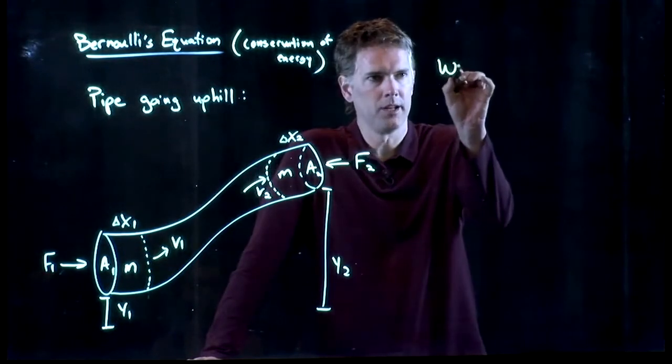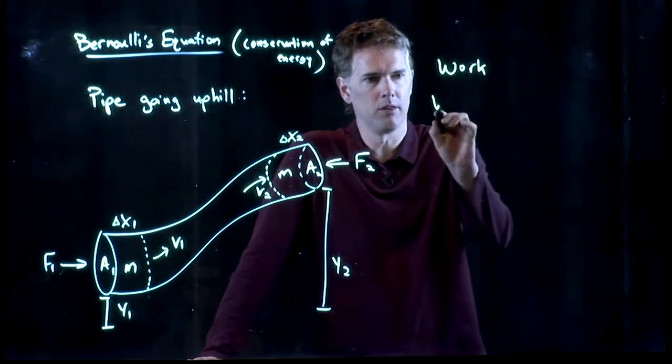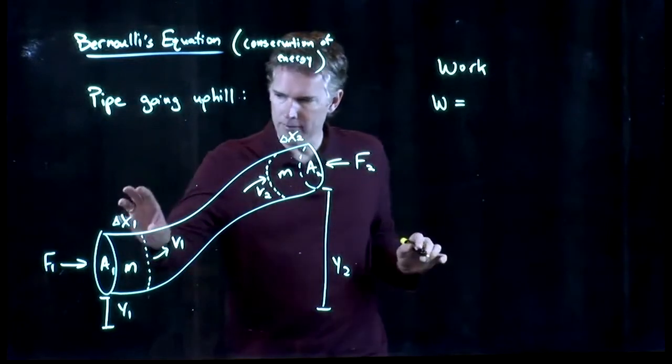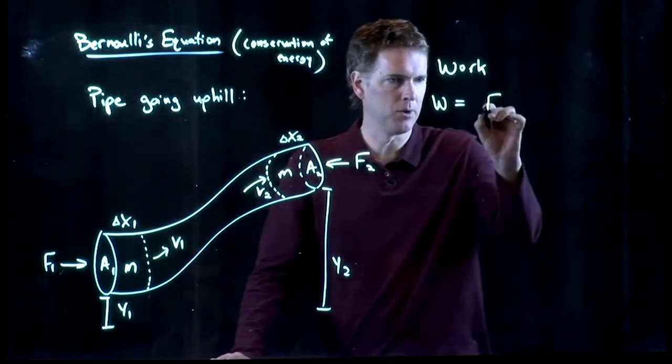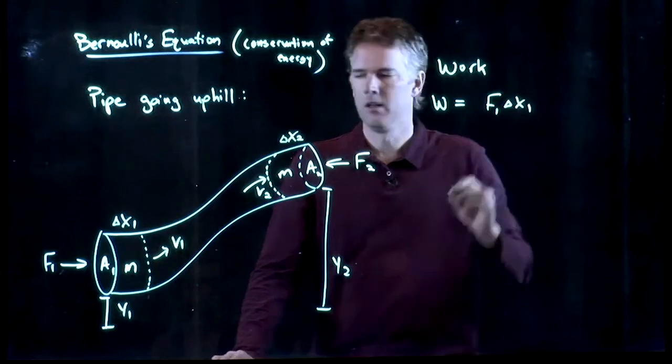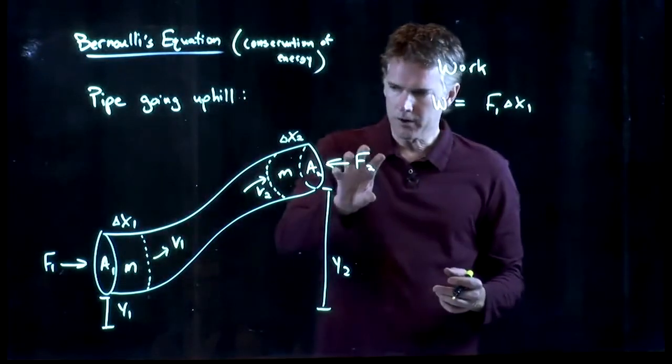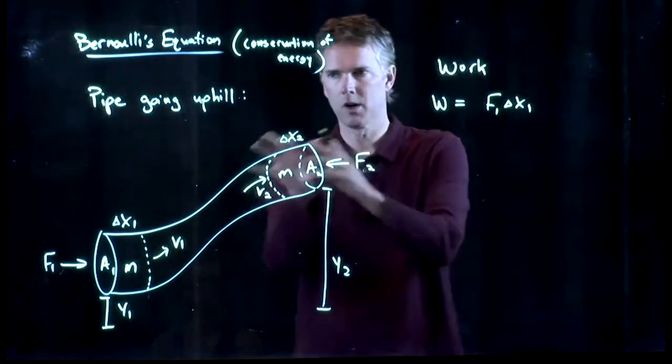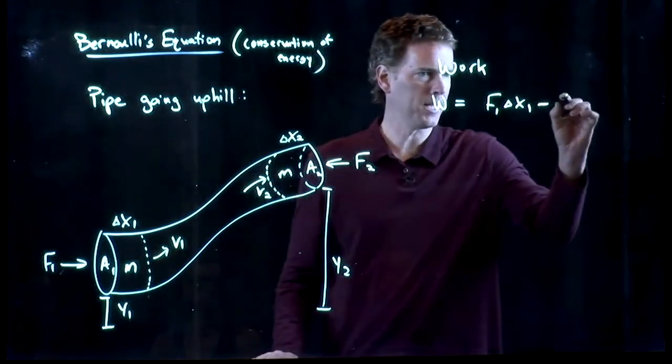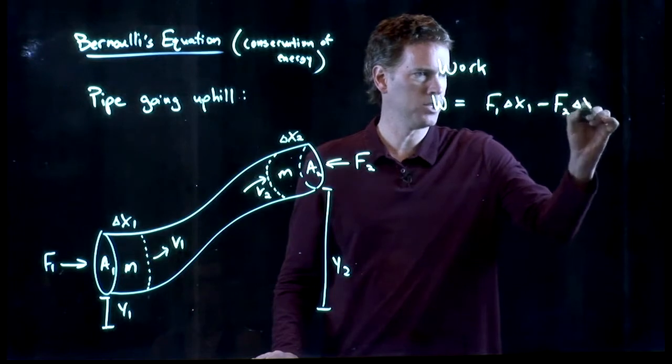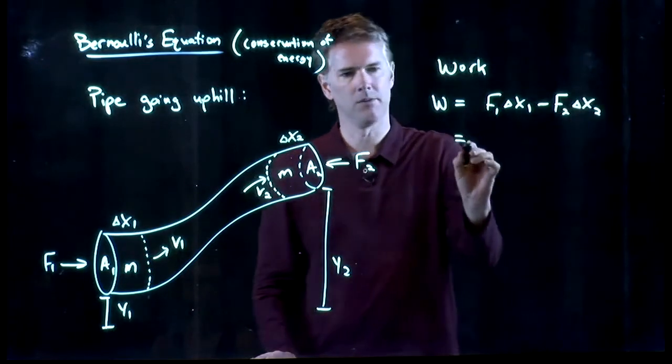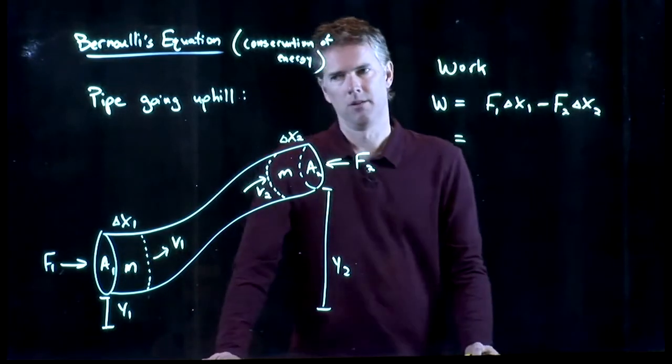The work involved in moving the fluid is going to be what? Well, we have F1 delta x1 pushing this fluid up. There's some work of this one trying to go the other way, but the fluid is still moving up. And so we have to make a minus sign, F2 delta x2.